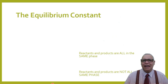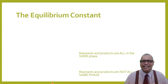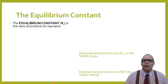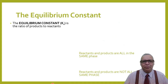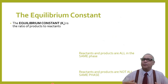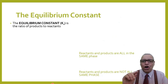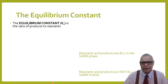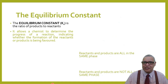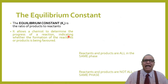This brings us to the equilibrium constant, often called the Kc constant. The equilibrium constant Kc is the ratio of products to reactants. The concentration of products is always in the numerator and the concentration of reactants is in the denominator. The Kc constant allows a chemist to determine the progress of a reaction, indicating whether the formation of reactants or products is being favored.